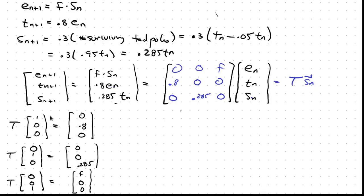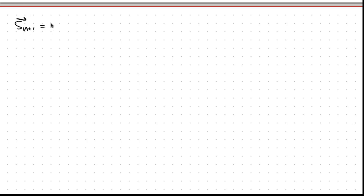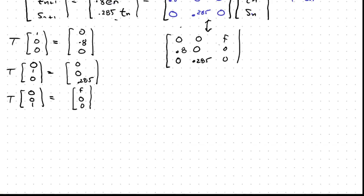Since this is a linear transformation, T acting on [1,0,0] gives the first column, T acting on [0,1,0] gives the second column, and the third column is [F, 0, 0]. So the matrix is: top row [0, 0, F], middle row [0.8, 0, 0], bottom row [0, 0.285, 0]. This means that to get the distribution of animals at the next time step, I multiply my current state vector by this matrix.